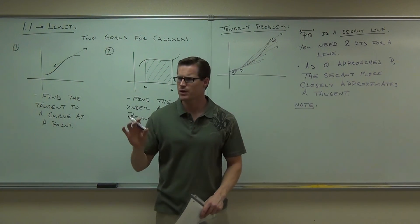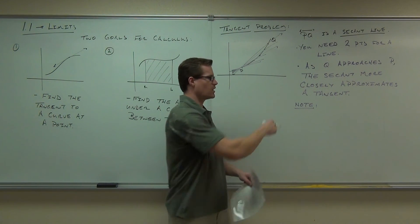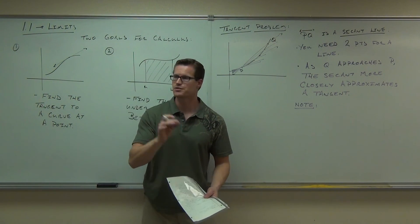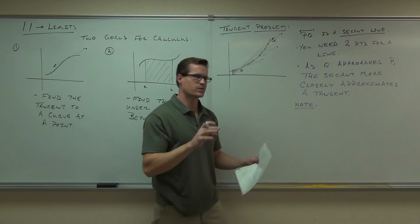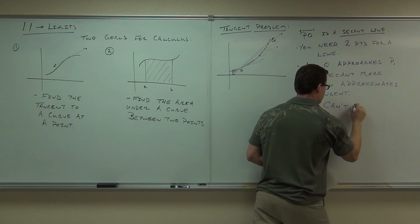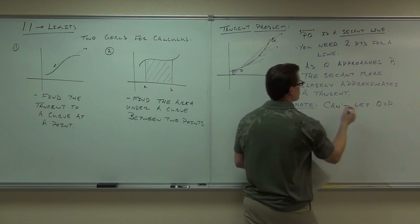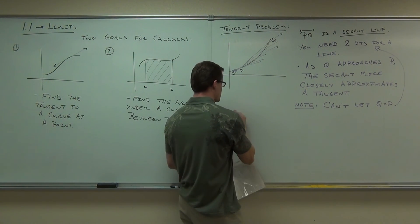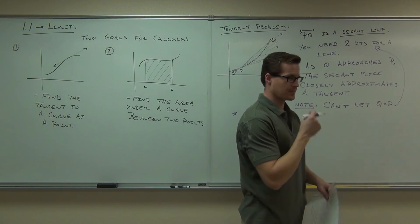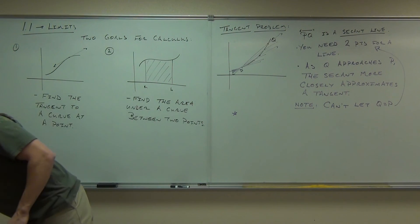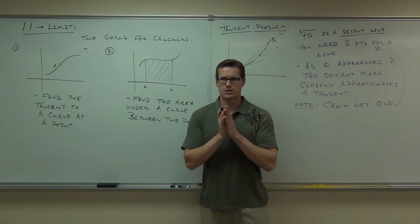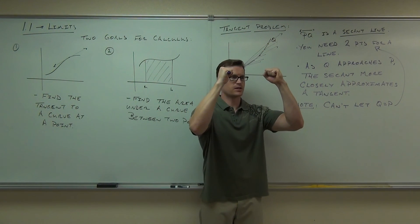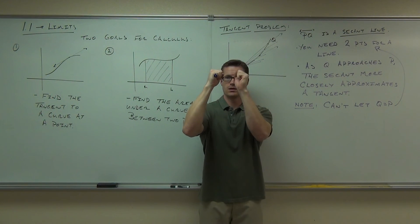Why can't we just let Q equal P? Because there wouldn't be two actual points — it would be the same point twice, and you can't make an equation of a line with that. We can't let Q equal P because we need two points to make a line. Here's the big idea for limits: how close can you get one point to another without them being the same point? Let's say I have two points — can you find some space between them? Let's move it to the midpoint — can you find some space between them?